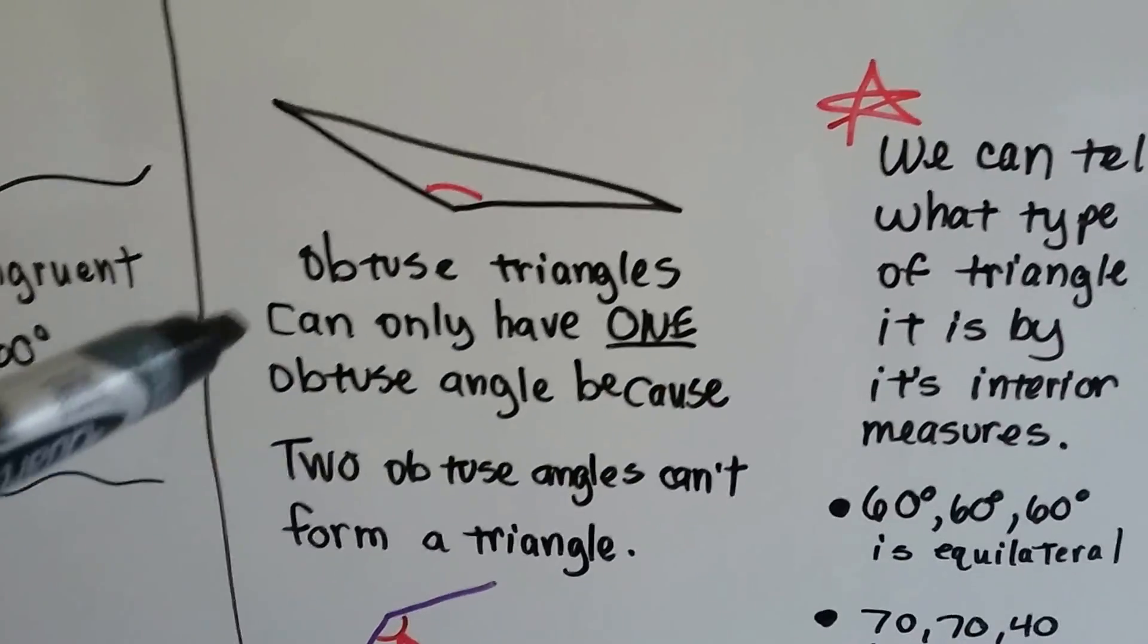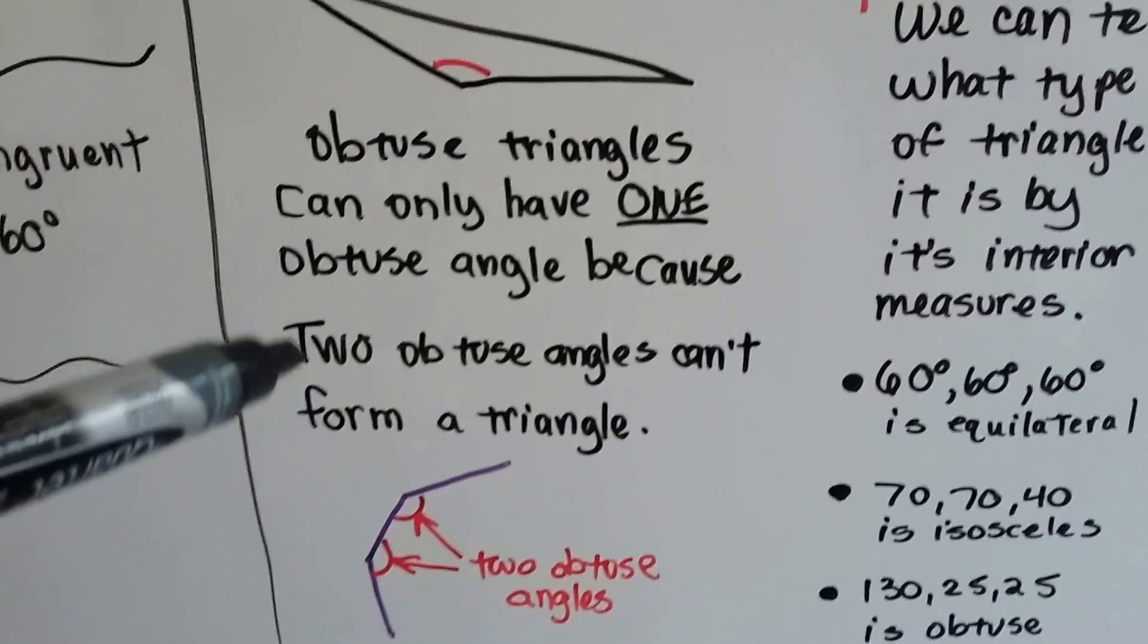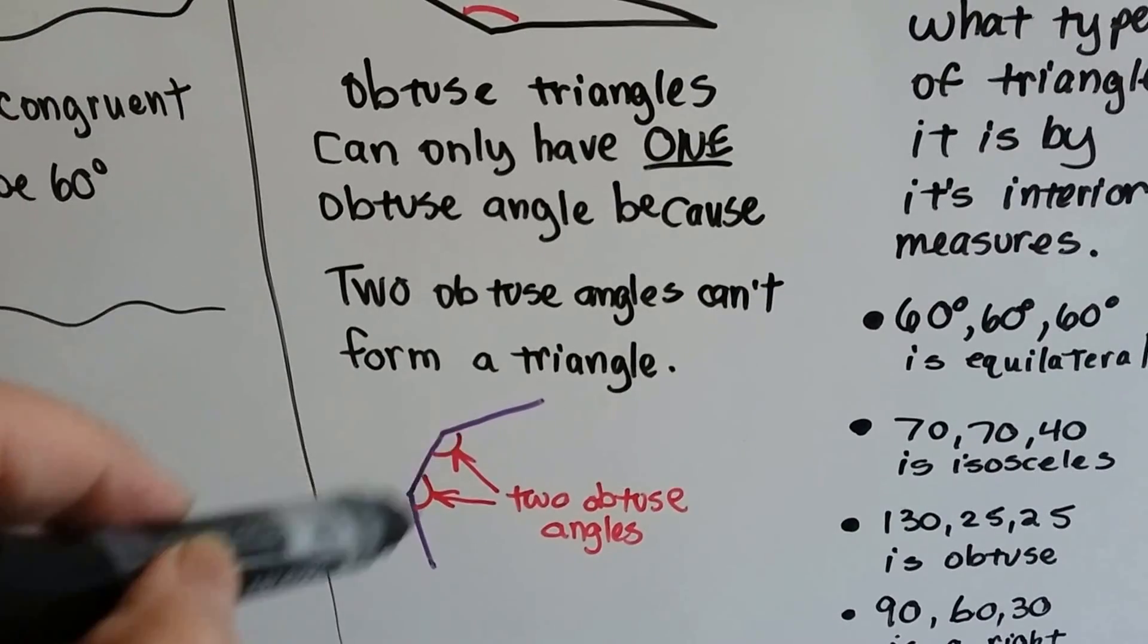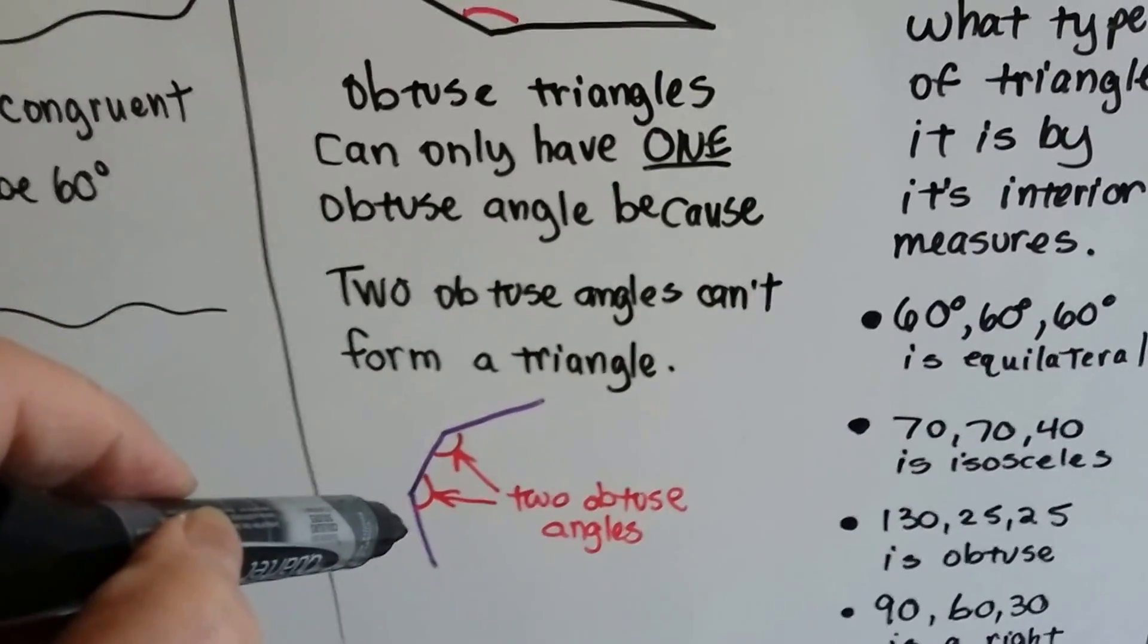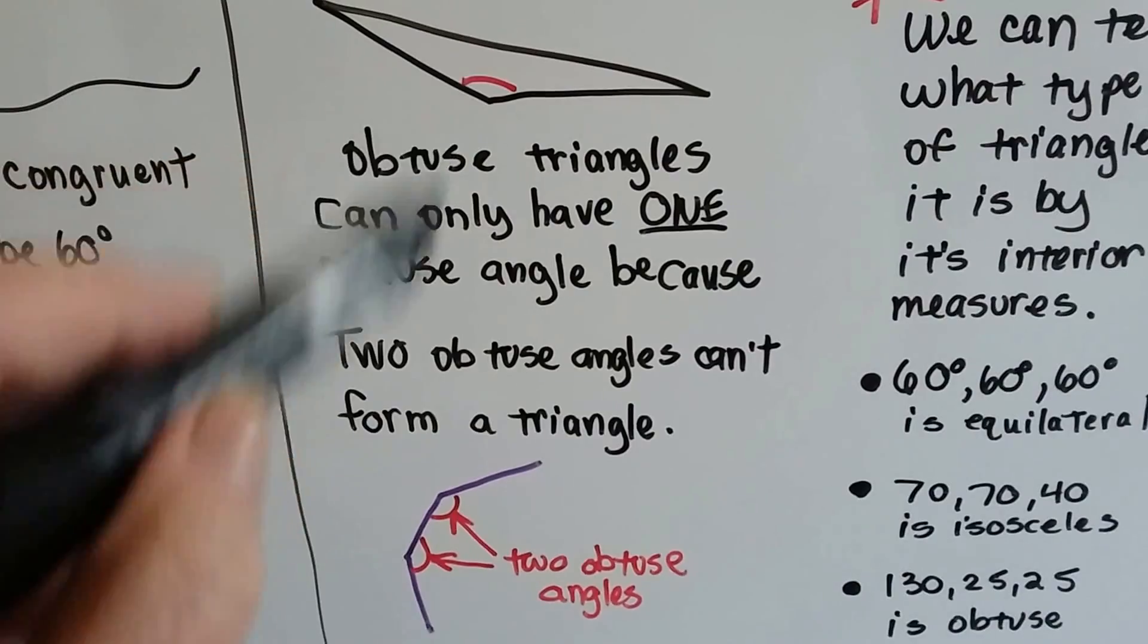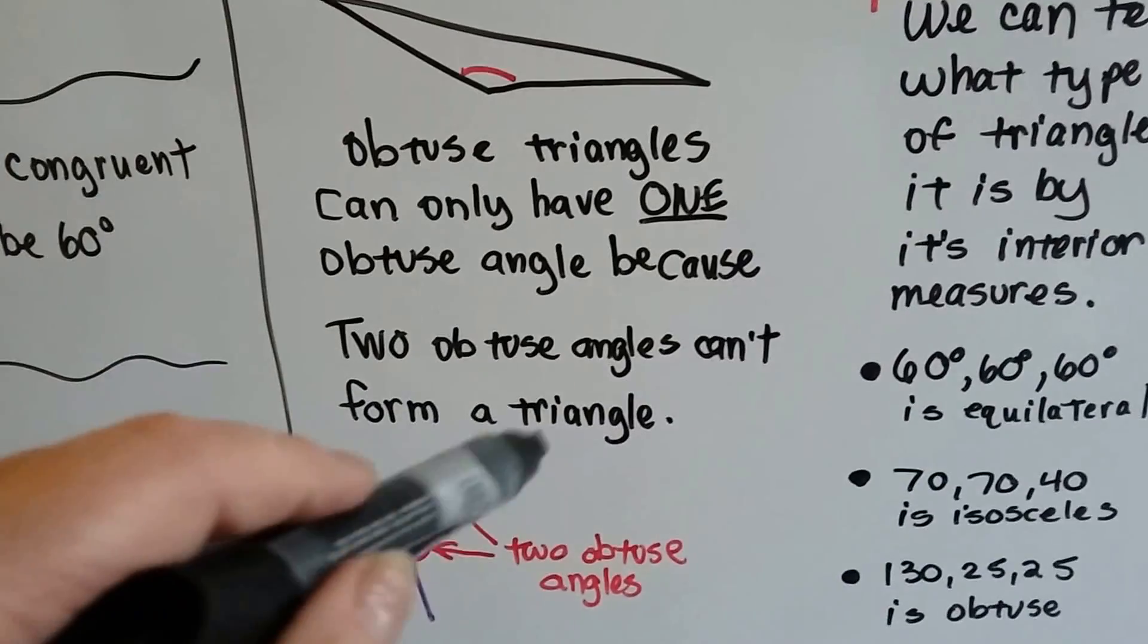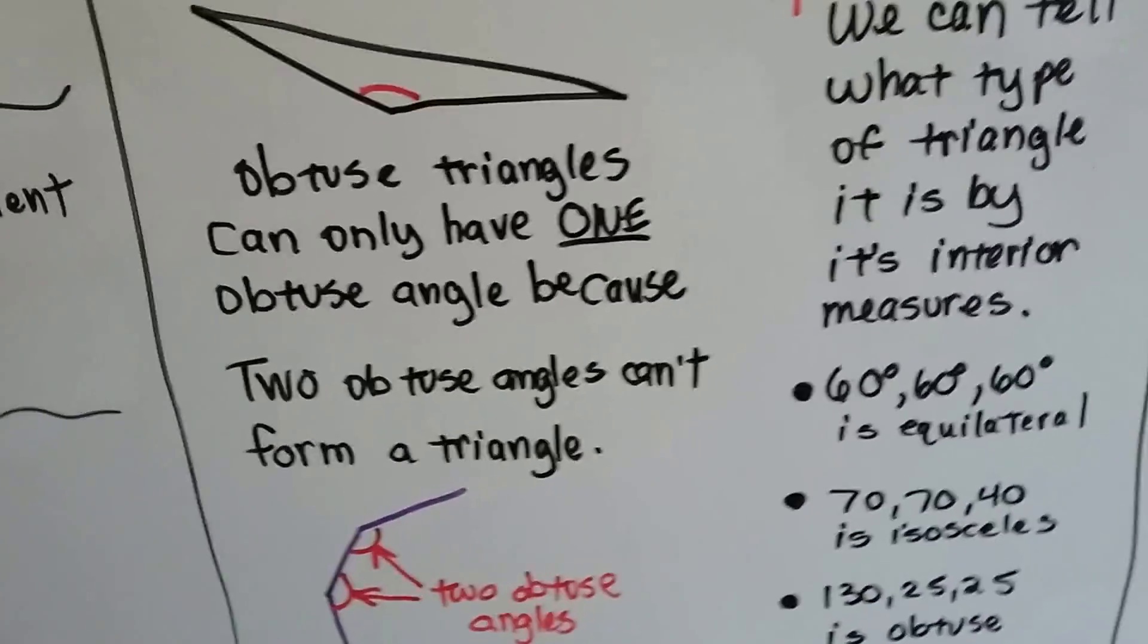Obtuse triangles can only have one obtuse angle, because two obtuse angles can't form a triangle. It wouldn't close. The two angles would be too big, and the triangle wouldn't be able to close. It would be some other shape.